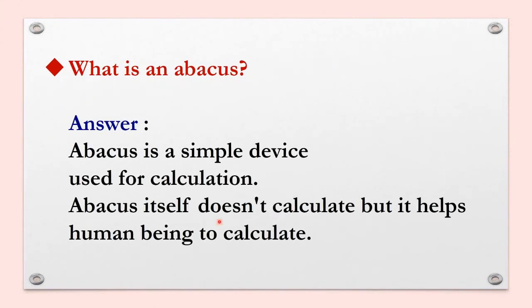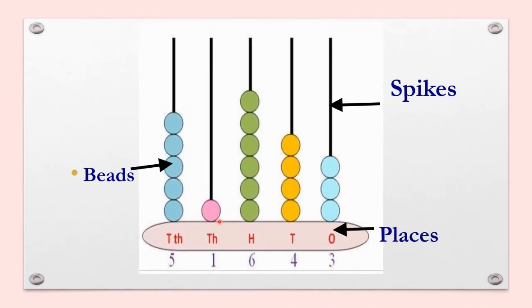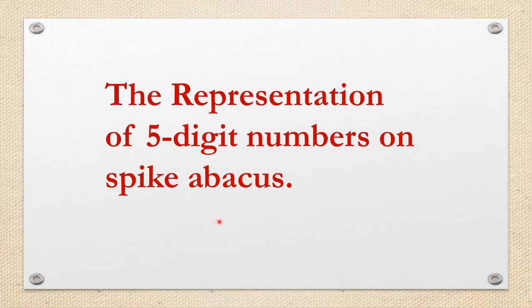What is an abacus? An abacus is a simple device used for calculation. The abacus itself doesn't calculate but it helps human beings to calculate. This is an abacus. Each bead represents counting ones and each spike represents places: ones place, tens place, hundreds place, thousands place and tens thousands place. Now let us see the representation of five-digit numbers on spike abacus.